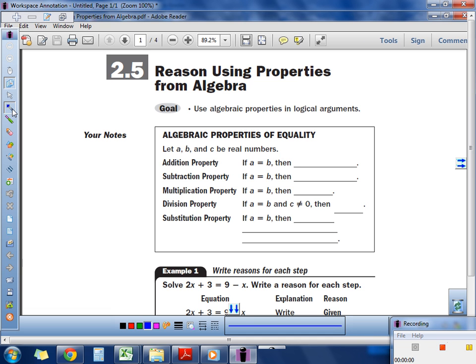If you weren't good, we'll work on it today. First thing, addition property. This is a pretty simple one. If A equals B, then what can we also say? A plus C equals B plus C. This means we can add C to each side. Write those words out to the side. Add C to each side.